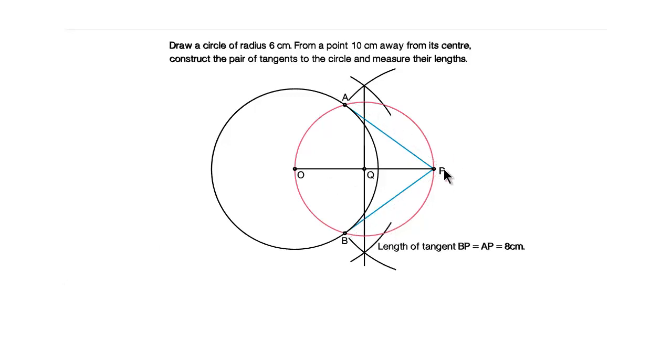So AP and BP are the required tangents. So that's it for now. In the next video I will teach you how to draw tangent for the concentric circles.